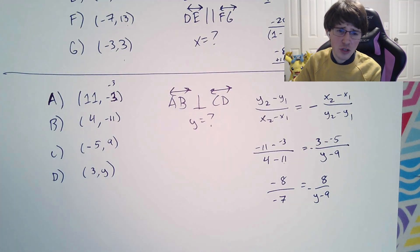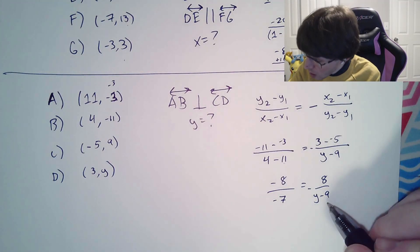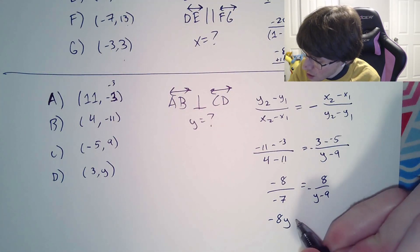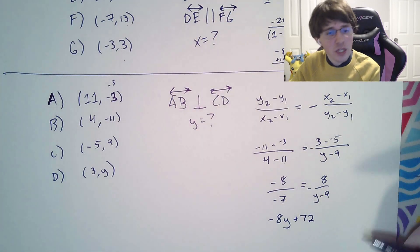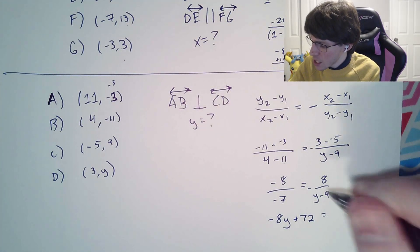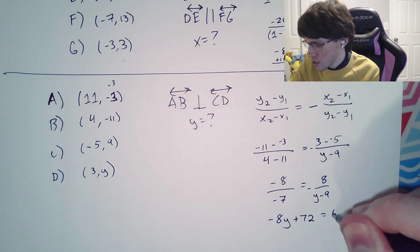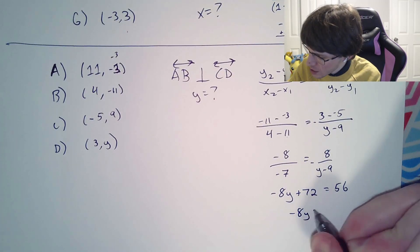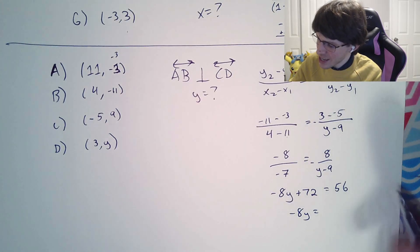Just like the previous question, now we're going to cross-multiply. So that y minus 9 is being thrown up there. You have negative 8y plus 72, and you're doing that distributive property. And then negative 8 times negative 7 is 56.